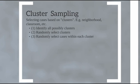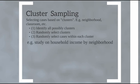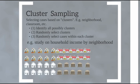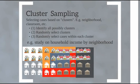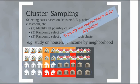Cluster sampling is more geographic or location based rather than trait or characteristic based. There are several steps: first, identify all possible clusters; then randomly select clusters; then randomly select cases within each cluster. For a study of household income by neighborhood with our 40 houses, we think of houses as split into neighborhoods where each color represents a different neighborhood. We randomly select half the neighborhoods — three neighborhoods — and then randomly select houses within those neighborhoods.